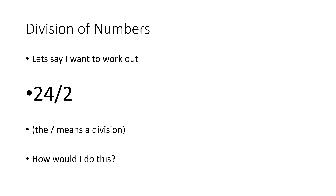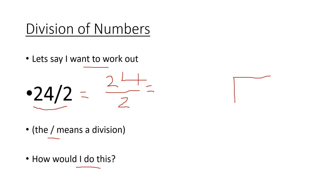Now for division of numbers. Let's say I want to work out 24 divided by 2 — the line means division. It's asking how many 2s go into 24. I'll use the bus stop method. How many 2s go into 2? That's 1 with 0 left over. How many 2s go into 4? That's 2 with 0 left over. So the answer is 12.